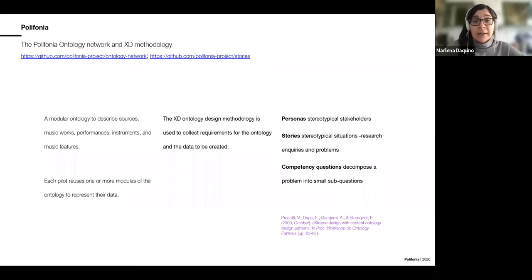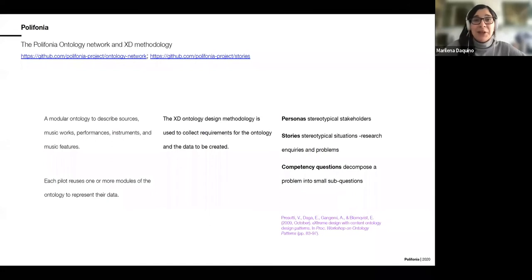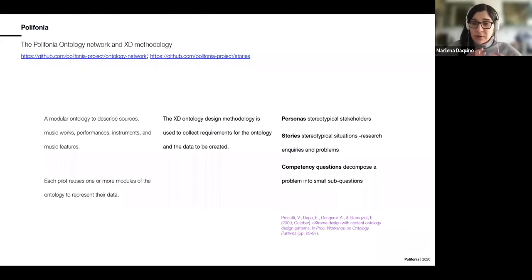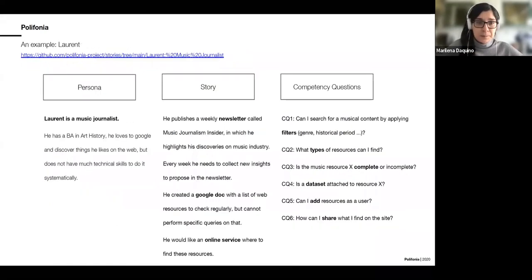To design this ontology network, we use a methodology called Extreme Design, which is very similar to user interface design methodologies. It requires a bottom-up approach to collect requirements from real people: you interview people, define stereotypical stakeholders called personas, and for each persona you may have different stories representing their tasks or interests. For each story, you deconstruct it to grasp the main underlying questions, which we call competency questions.